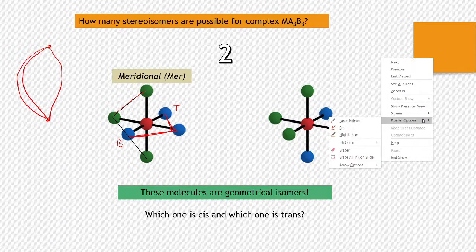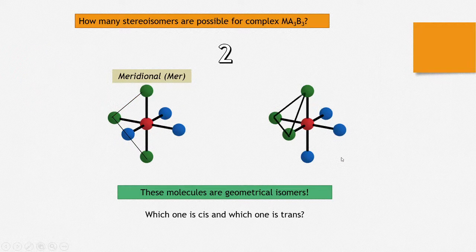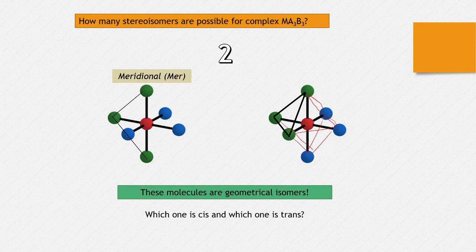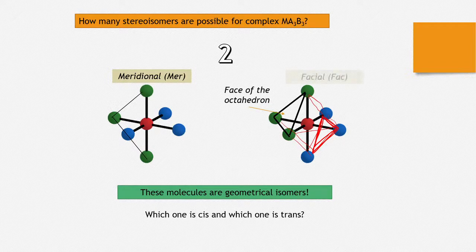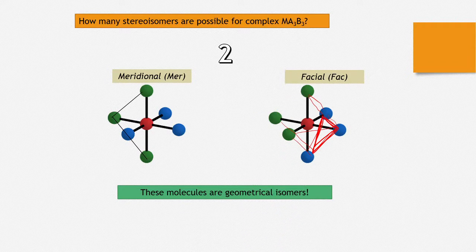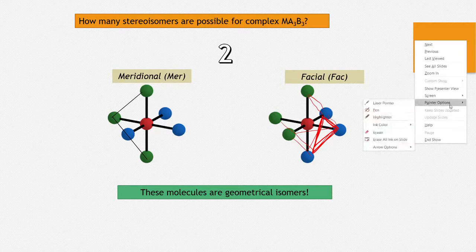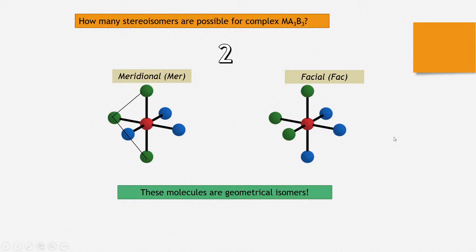In the second molecule, if we join the similar groups, what we get is a face of the octahedron. This octahedral shape can be fitted inside an octahedron, and when you join these three similar groups, you can see that the similar groups are on the face of the octahedron. So you can call them facial.